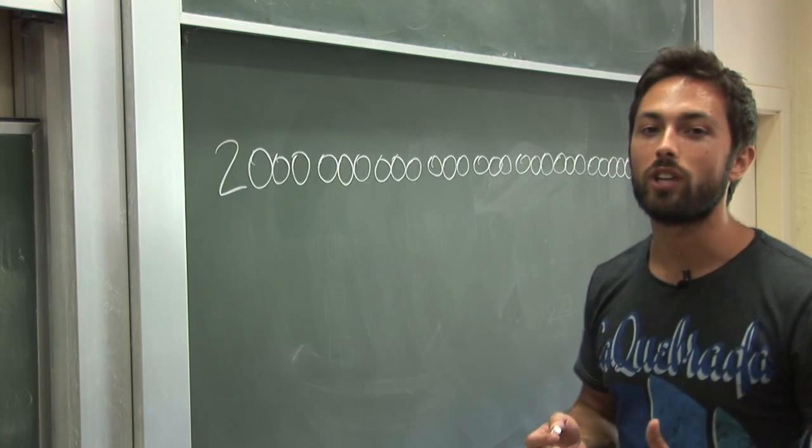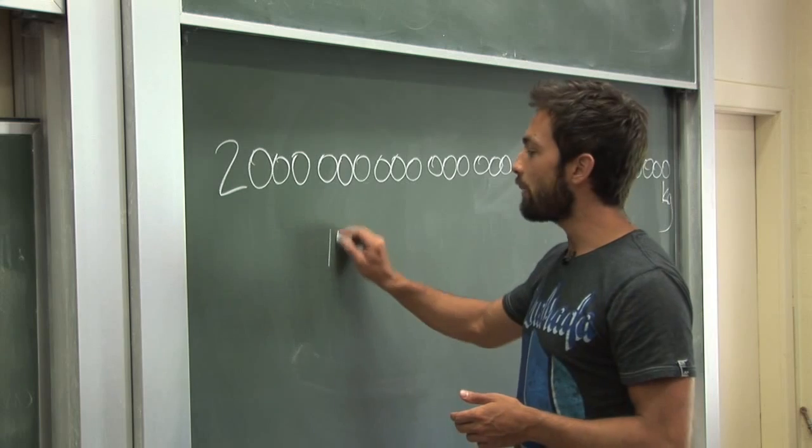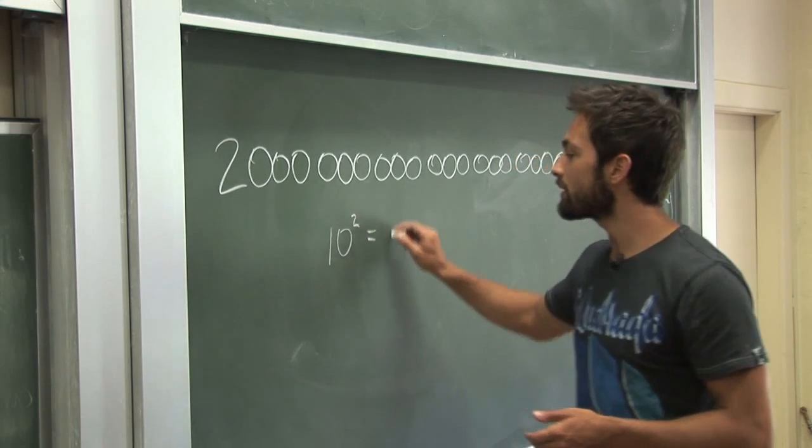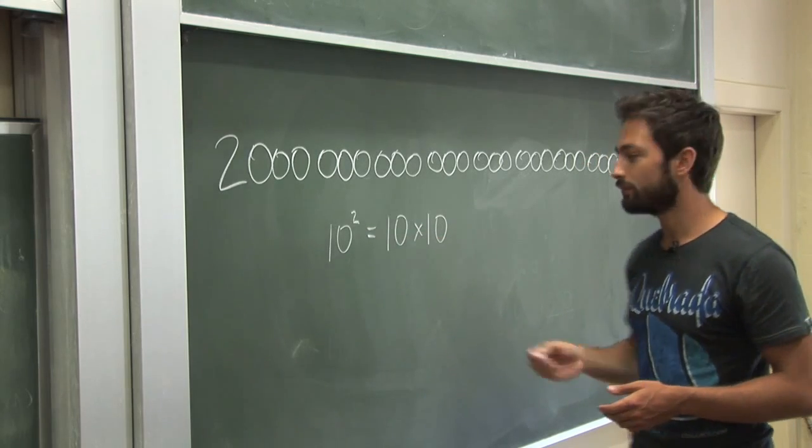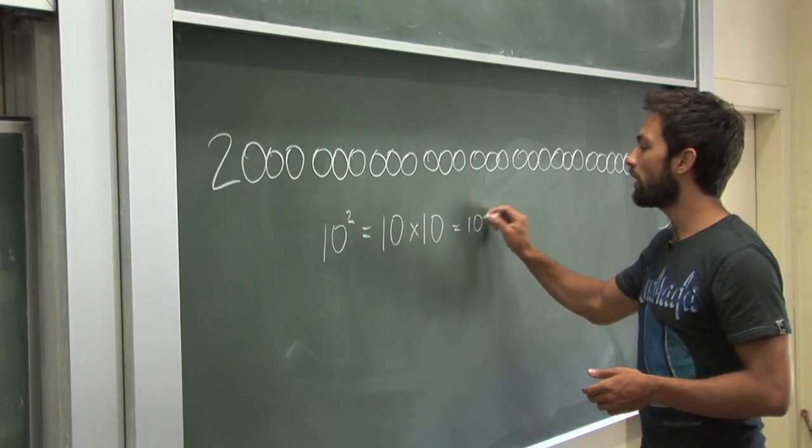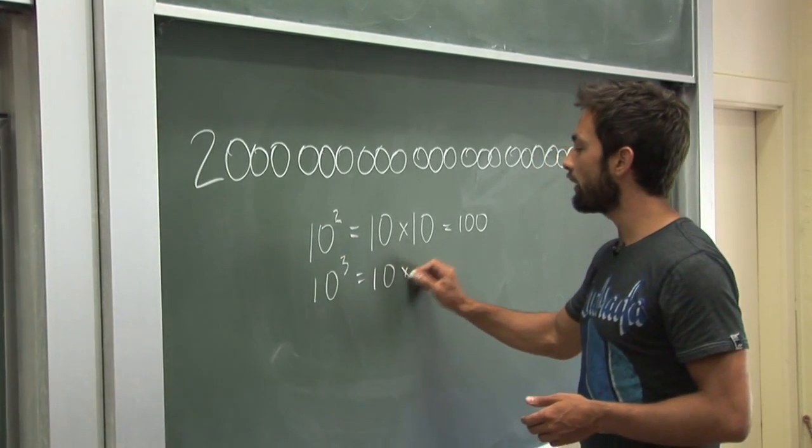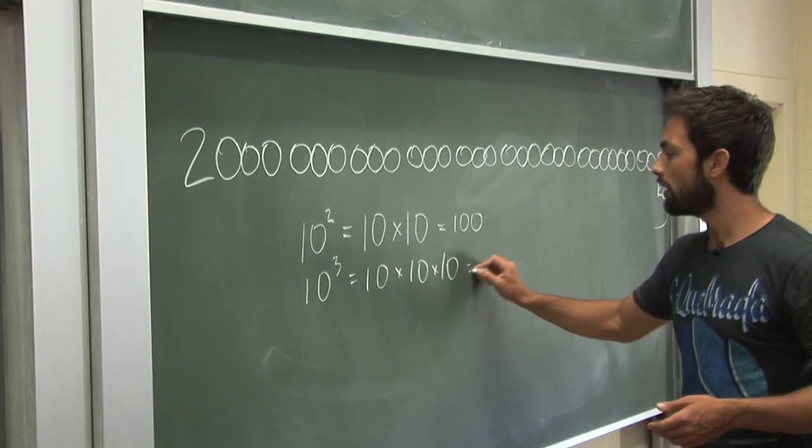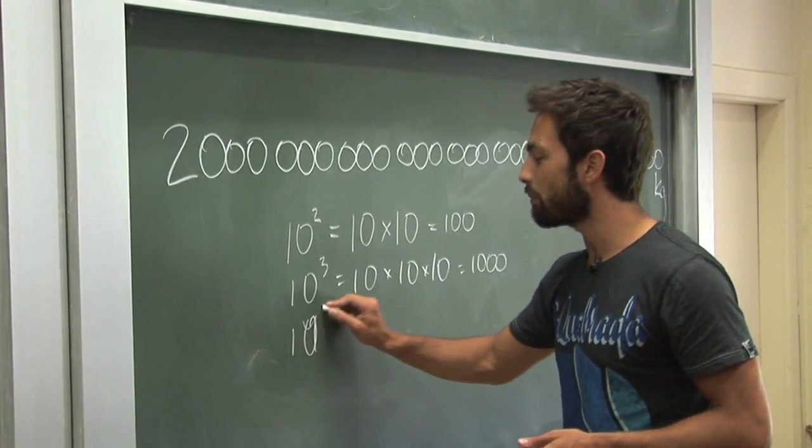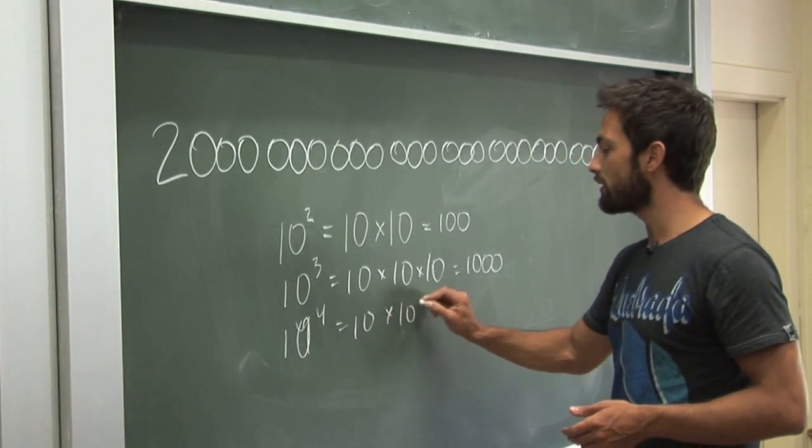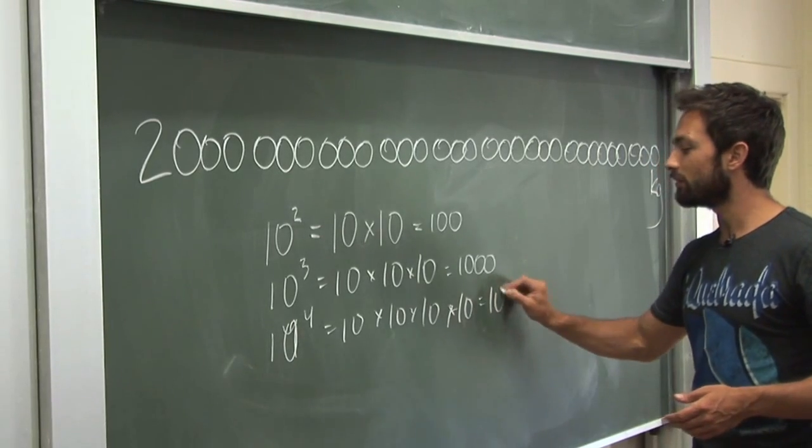Scientific notation takes advantage of powers of 10. For example, 10 to the power of 2 means take two tens and multiply them together, and you get 100. 10 to the power of 3 means multiply three tens together and you get 1,000. 10 to the power of 4 means take four tens and multiply them together, and you get 10,000.